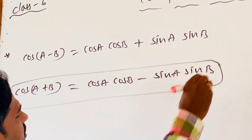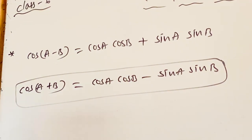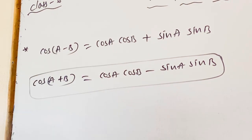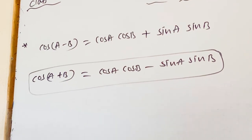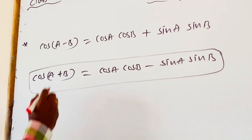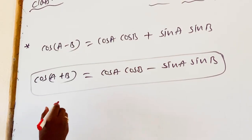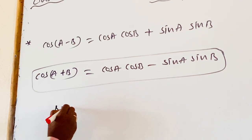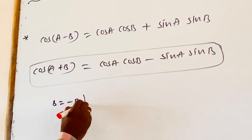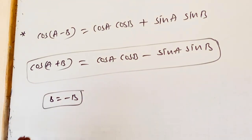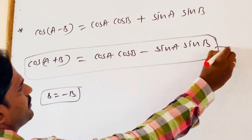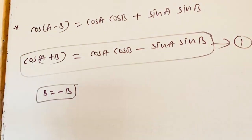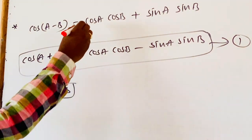From this derivative, we are finding the value of cos of A minus B. How to find cos of A minus B? By keeping B equal to minus B in equation 1, we will get the other condition.